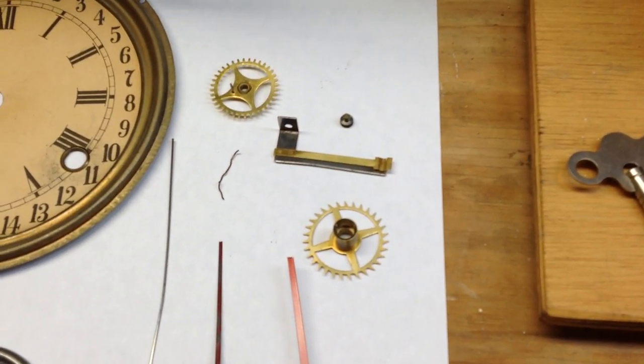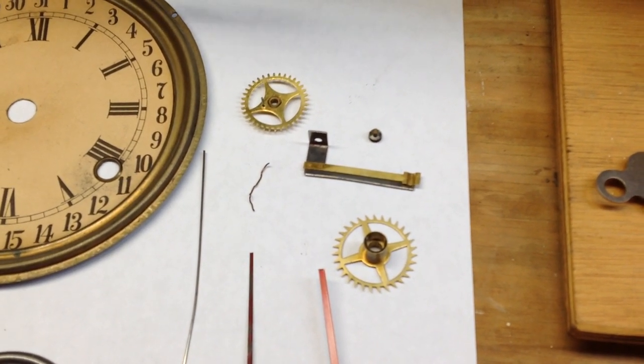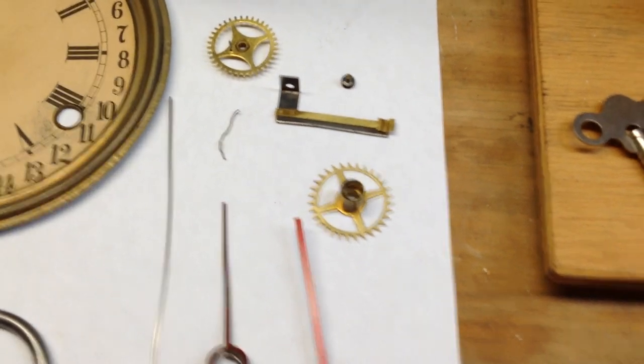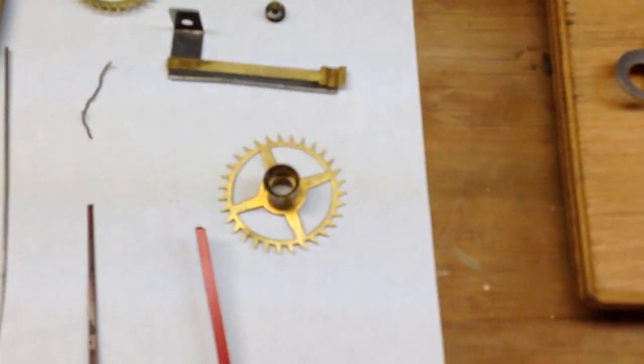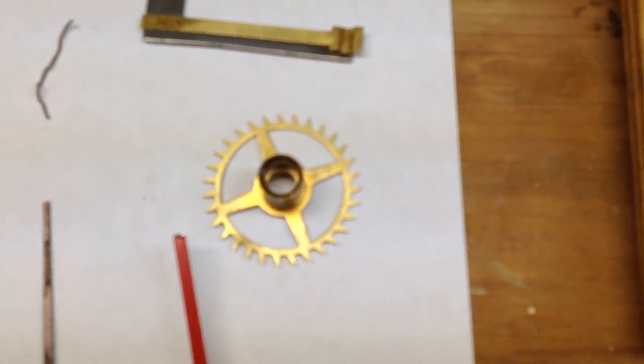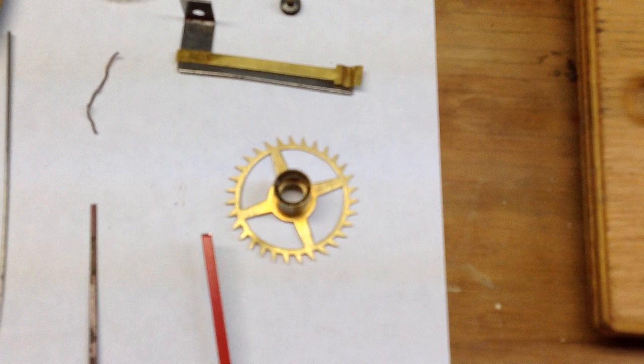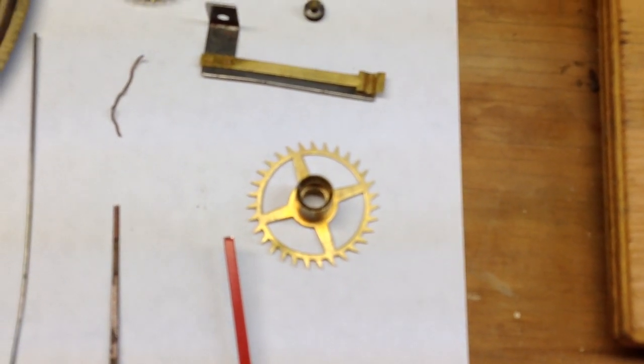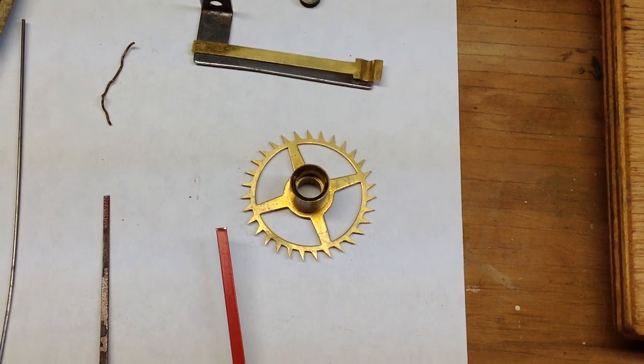There's just a handful of parts which I have not yet put back on that make the calendar function run. So this wheel here has 31 teeth on it corresponding to 31 days of the longest month.